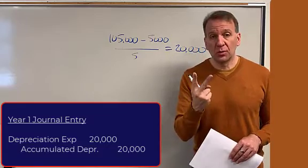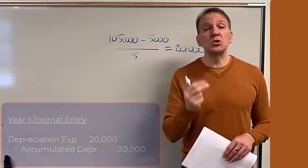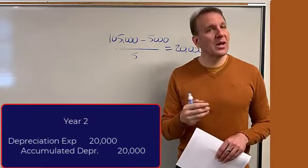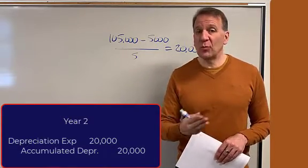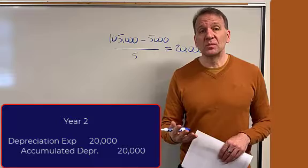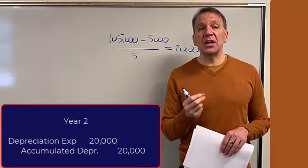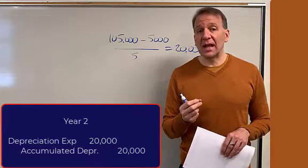In year two, we do that same journal entry again. In year three, we're going to do it again. Year four, we'll do it again. And if we still have it in year five, we'll do it again. It's that same journal entry each year when we're using the straight line method.